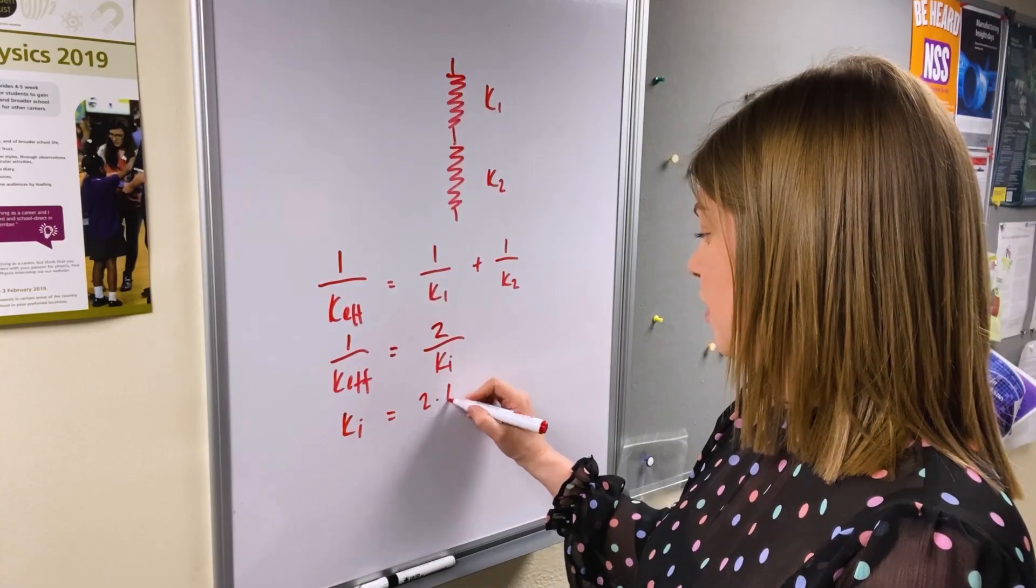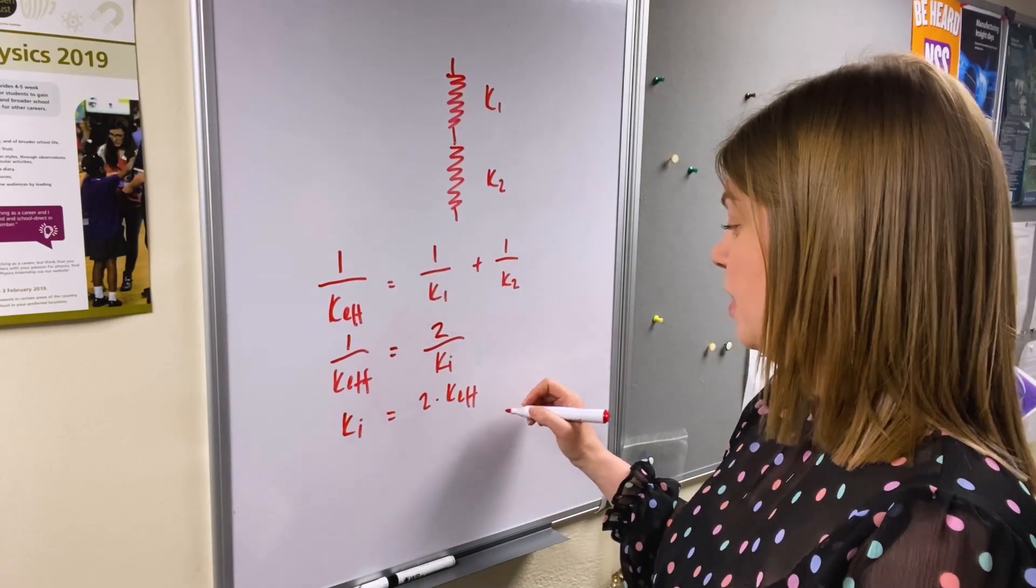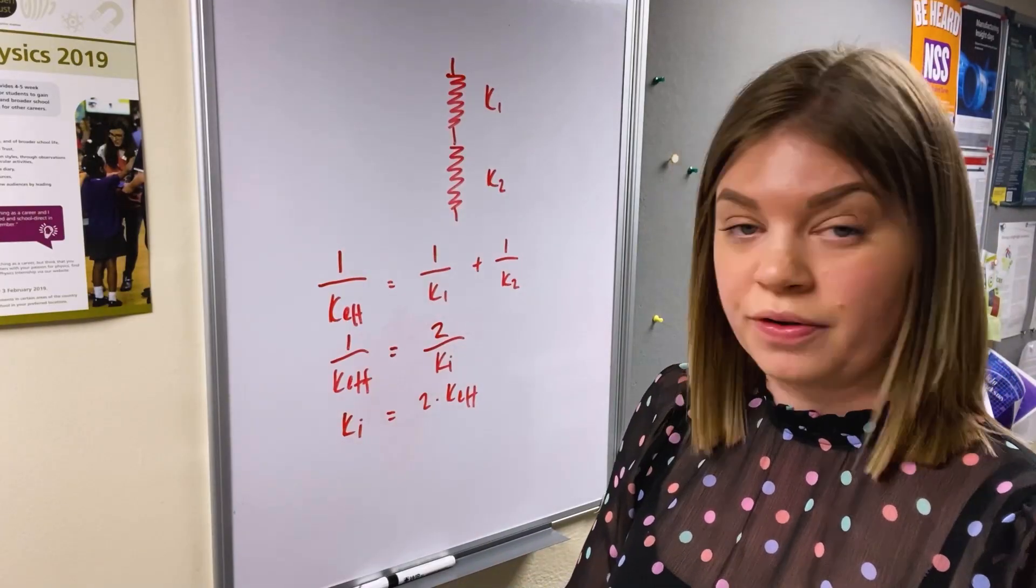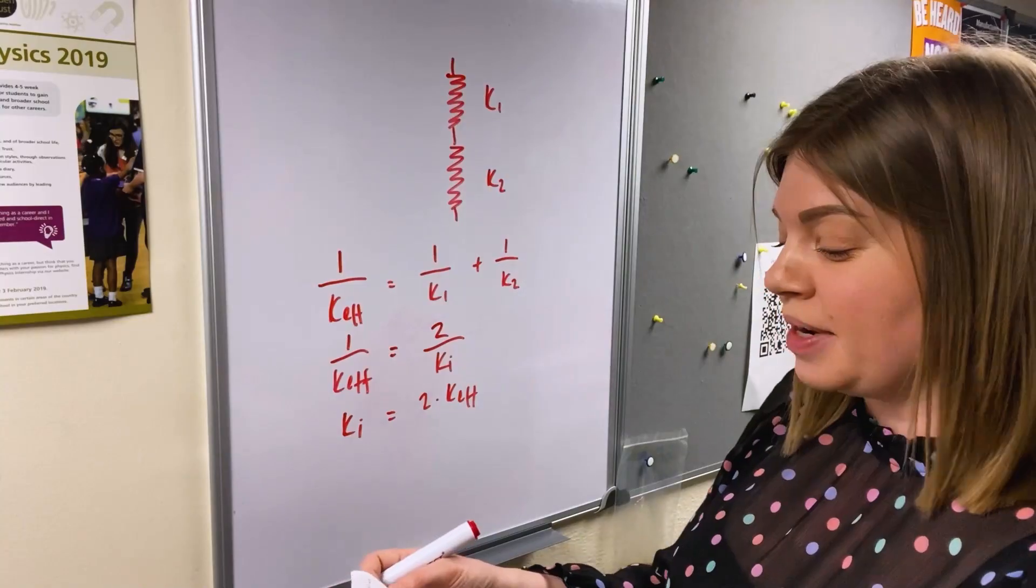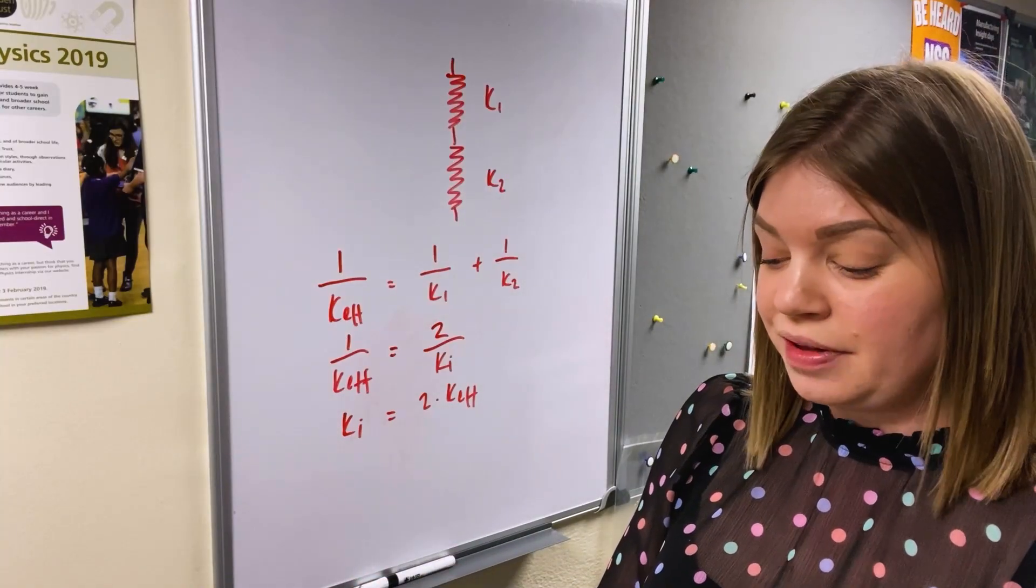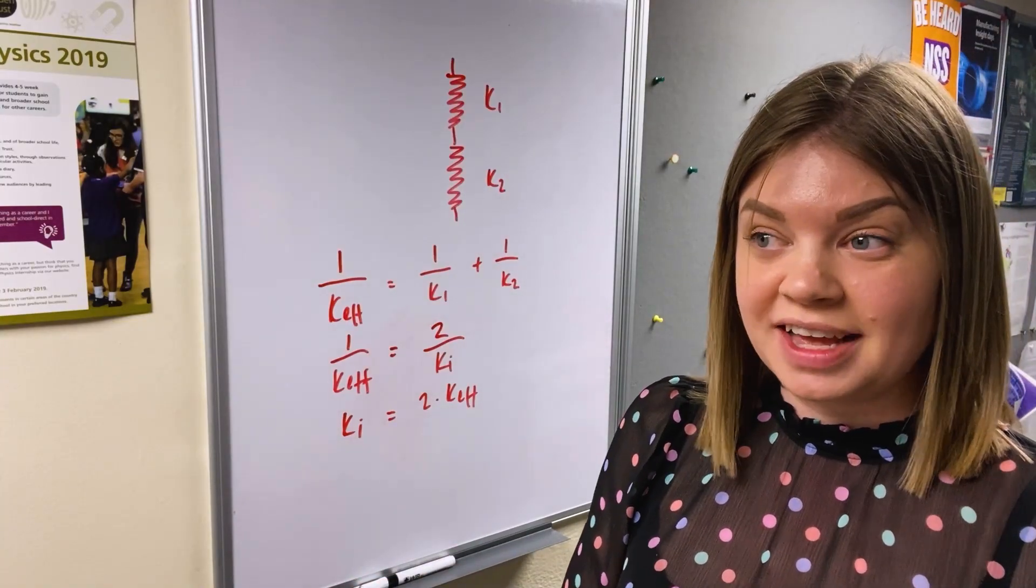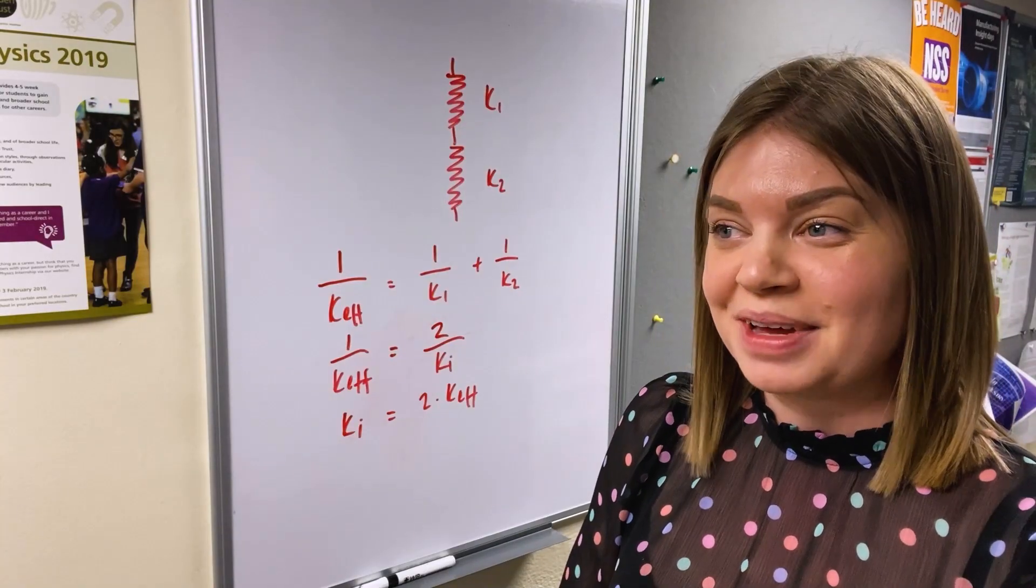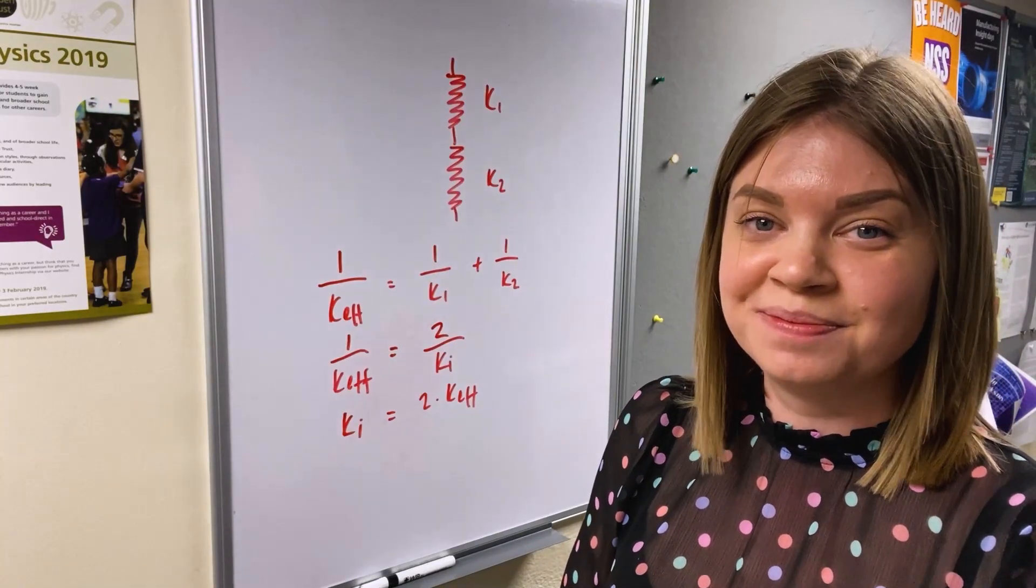From our graph we know that keff was 7.8454 so if we times that by two we get 15.69 which again is super super close to the value that we got for the spring on its own, and that makes for a very very happy physicist. Thanks for watching.